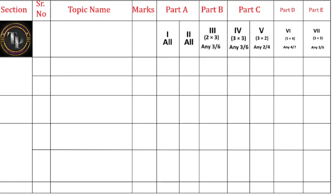We'll discuss in detail which chapter you are getting which question, with question numbers. Part D belongs to organic chemistry — five-mark questions are there. Seven questions are given to you and you have to answer four out of seven. Part E is a new part introduced this time — there you will get numerical problems from physical chemistry only. You have to answer three questions out of six. Numerical problems will only come from physical chemistry.